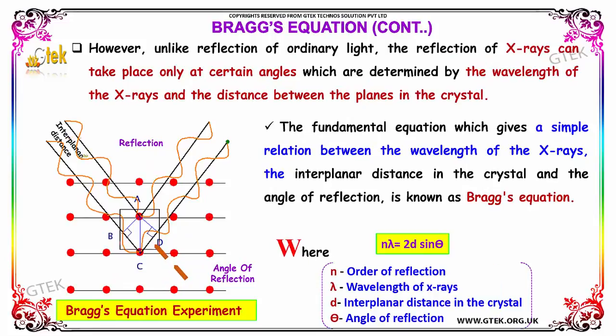However, unlike reflection of ordinary light, the reflection of X-rays can take place only at certain angles, which are determined by the wavelength of X-rays and the distance between the planes.